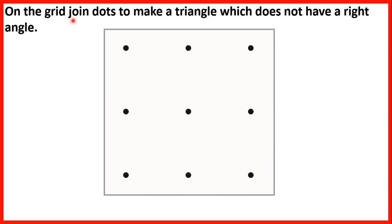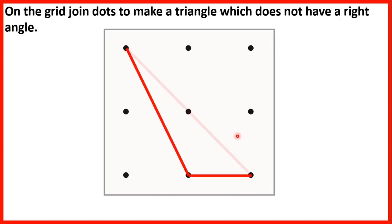On the grid, join dots to make a triangle which does not have a right angle. Remember, a right angle is like the corner of a piece of paper. We could draw a triangle like this, but there are lots of possible solutions. Check each angle: this angle here is obviously acute, this angle here is also acute, and this angle here must be obtuse because it is larger than a right angle. So none of our angles are right angles, and we have successfully joined the dots to make a triangle which does not have a right angle.